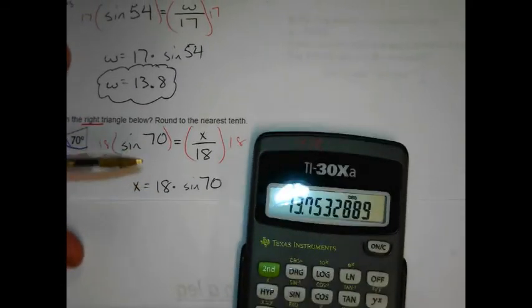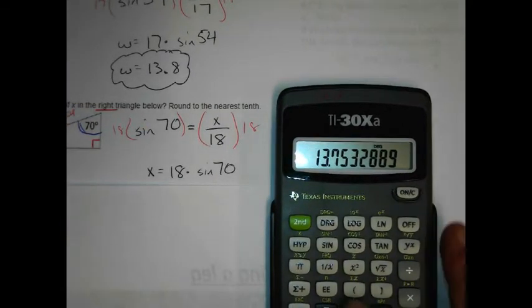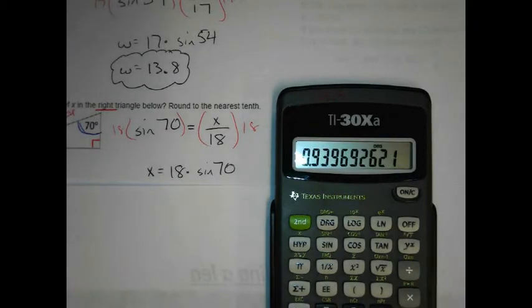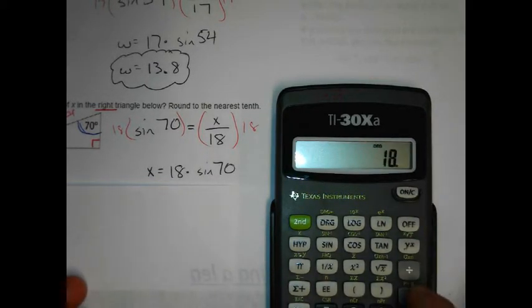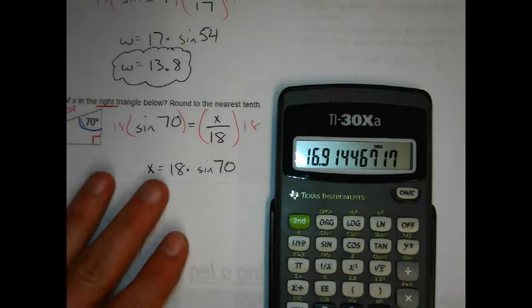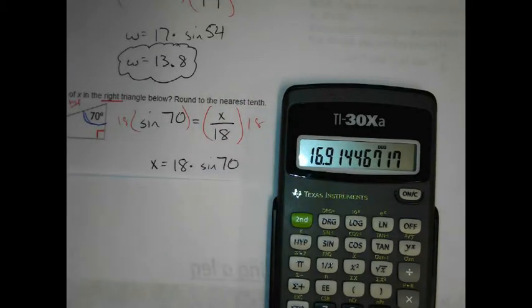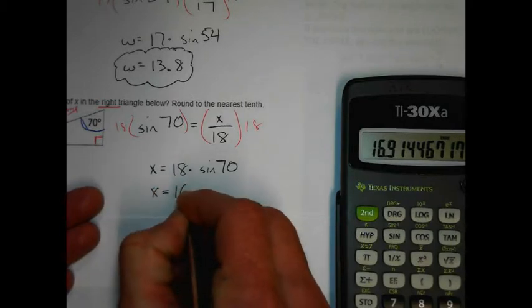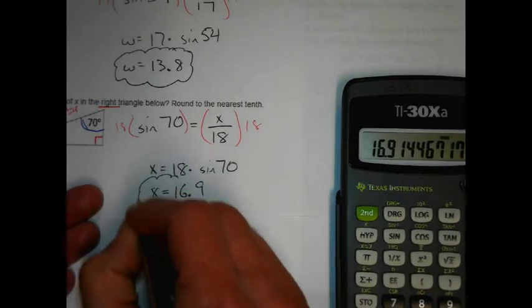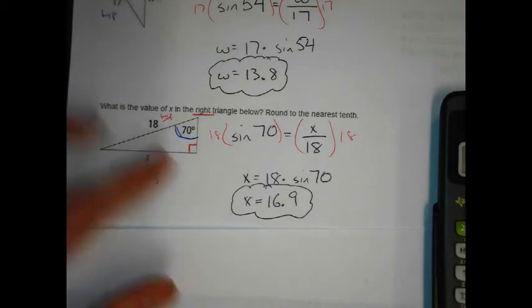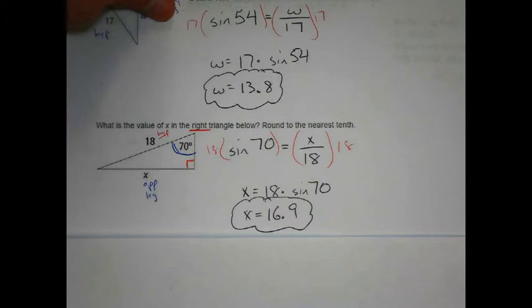Calculator time. 18 times the sine of 70 equals — 16.91. We're rounding to the nearest tenth. 16.91: the digit after the tenths place is 1, which isn't enough to round up, so x equals 16.9 units. Does that make sense? It can't be longer than 18, since that's the hypotenuse — and it isn't, so we're good to go.